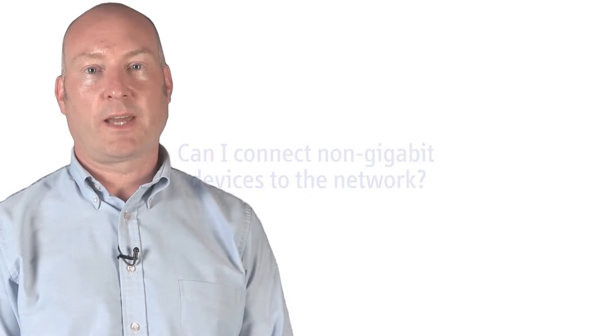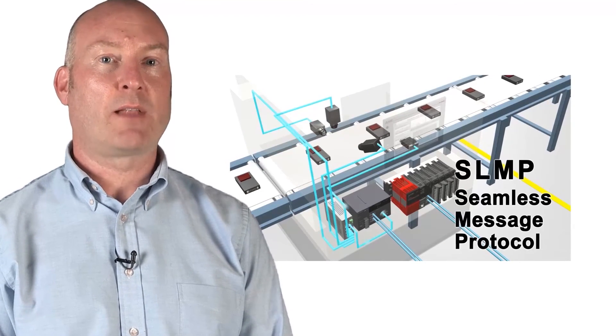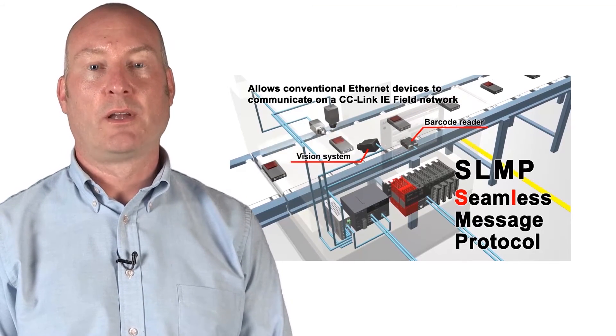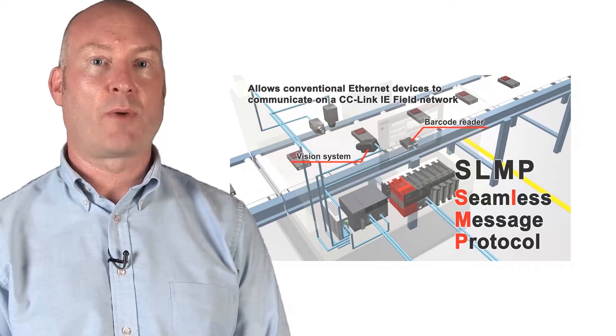It's possible to connect a non-gigabit device to a CC-Link IE network by using our SLMP technology. That stands for Seamless Message Protocol and allows any 100 megabit device to communicate with the rest of a CC-Link IE network through a gateway.